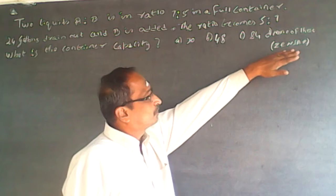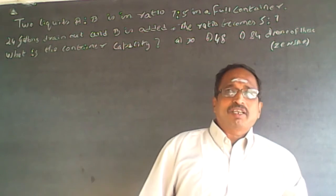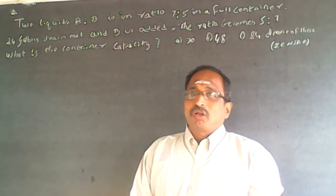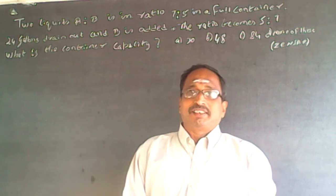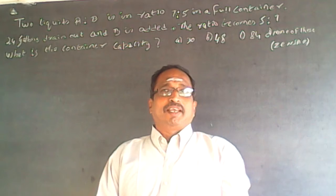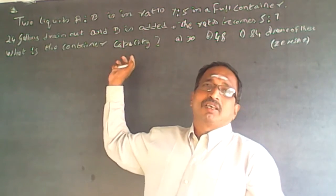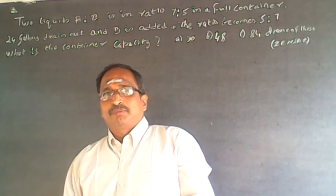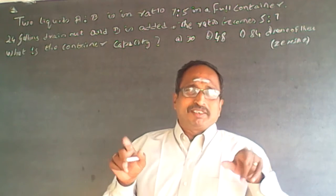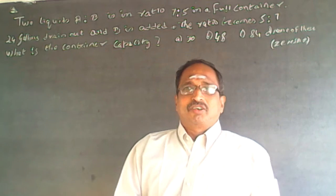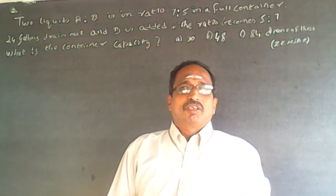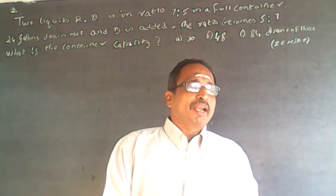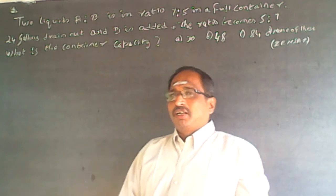This question has been asked in ZINSA. It is a quantitative question — more on ratios and proportions than on mixtures and allegations. Many get confused thinking this is a mixtures and allegations problem, but it is actually a ratio and proportion problem. There is only one mixture here, and 24 liters go out — you don't know in what ratio — so you must think in terms of ratios and proportions.